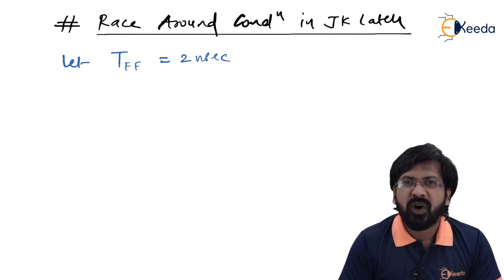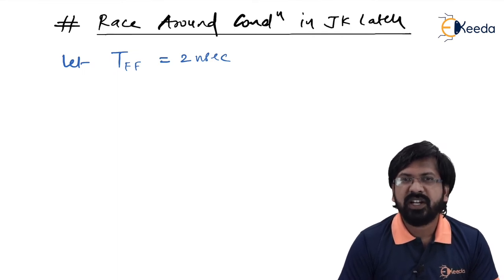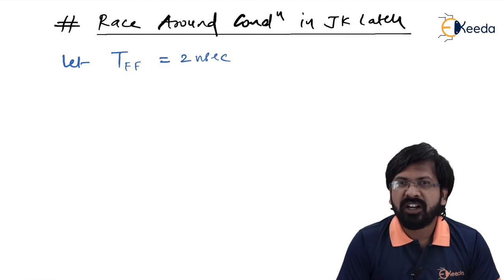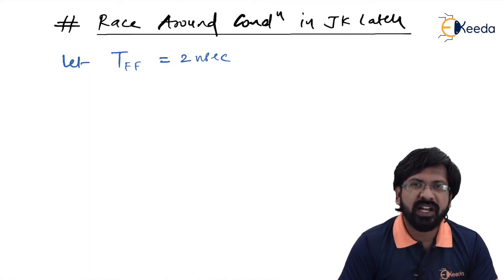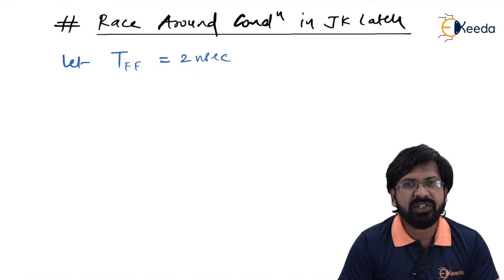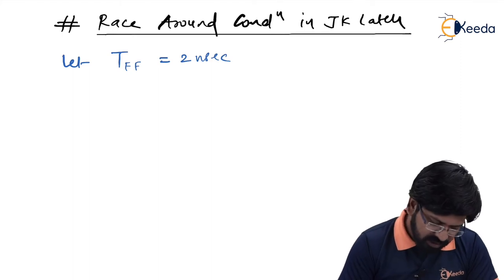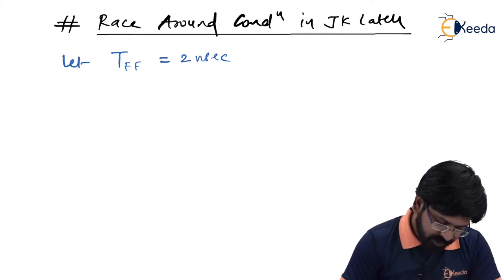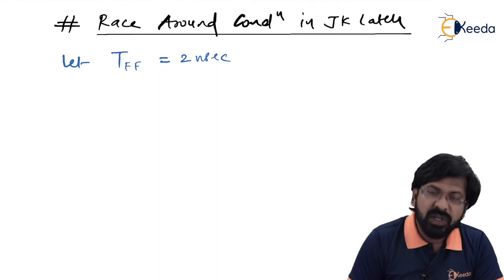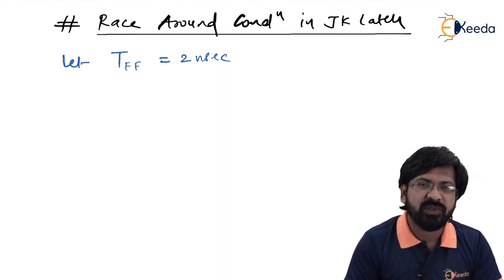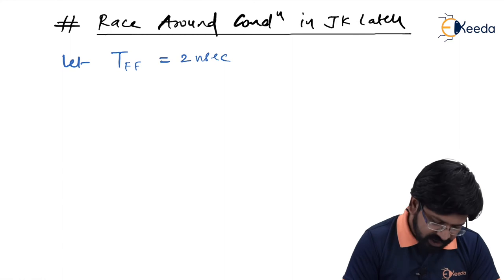Propagation delay means that when J=1 and K=1, the output does not toggle immediately — it takes some time because all those inputs are processed through a set of NAND gates, and every NAND gate has some delay. So this flip-flop will take some time to toggle its output. We assume that propagation delay equals 2 nanoseconds, meaning the output toggles after every 2 nanoseconds.